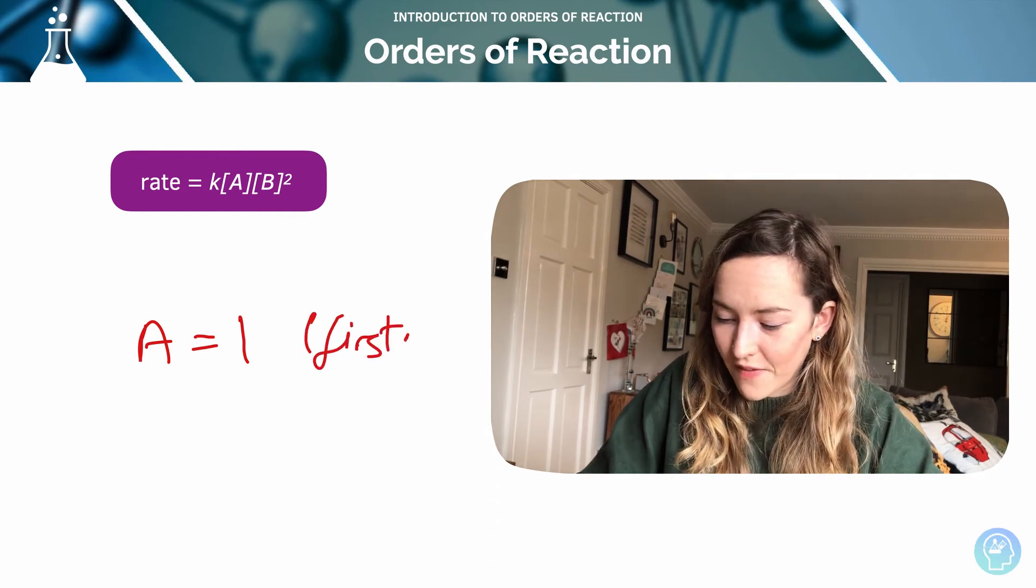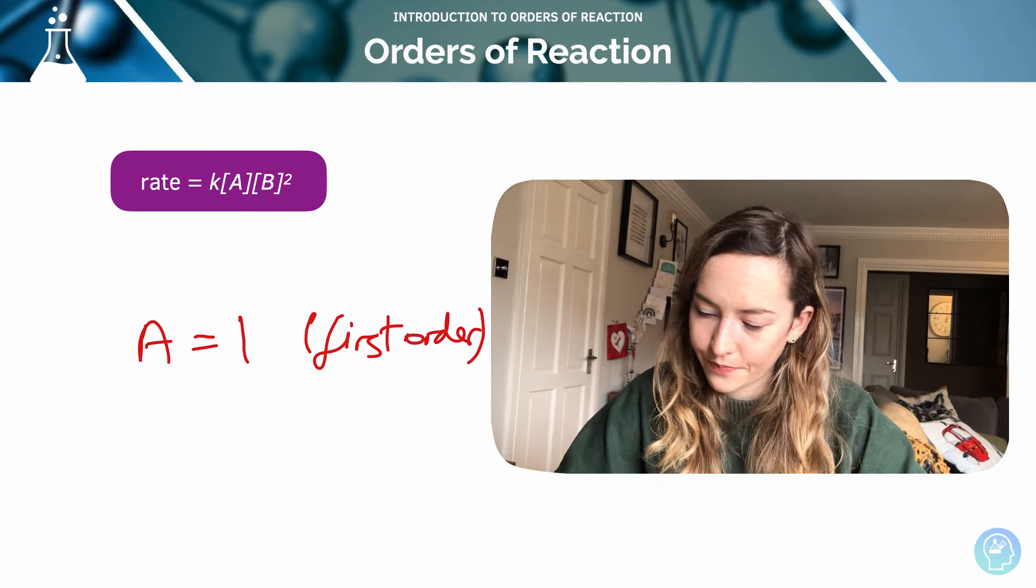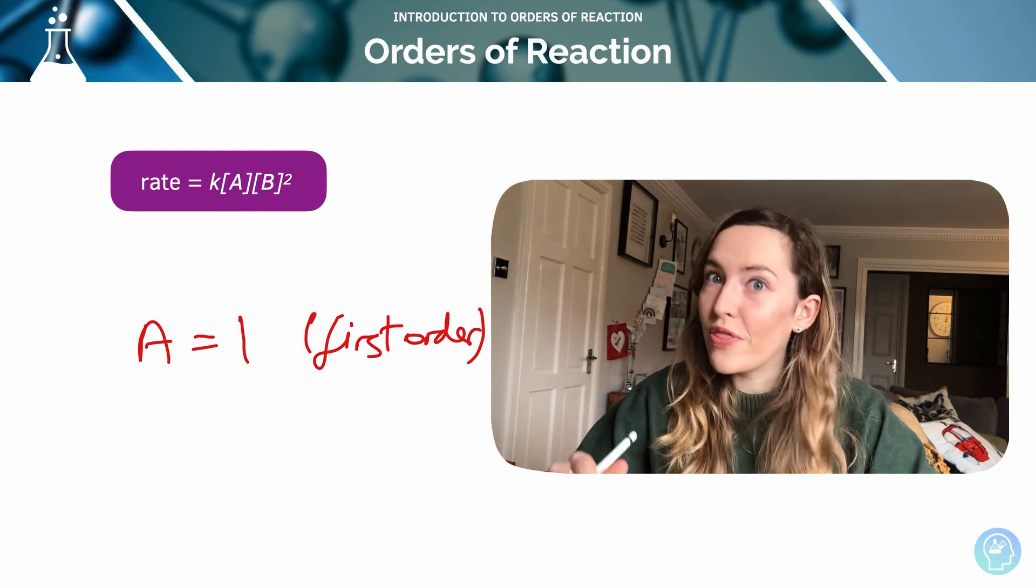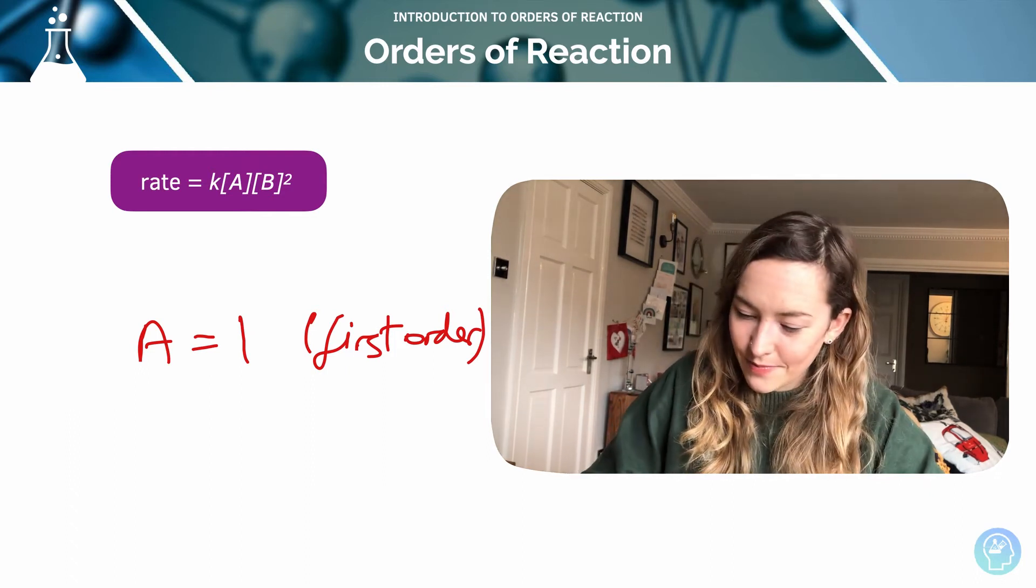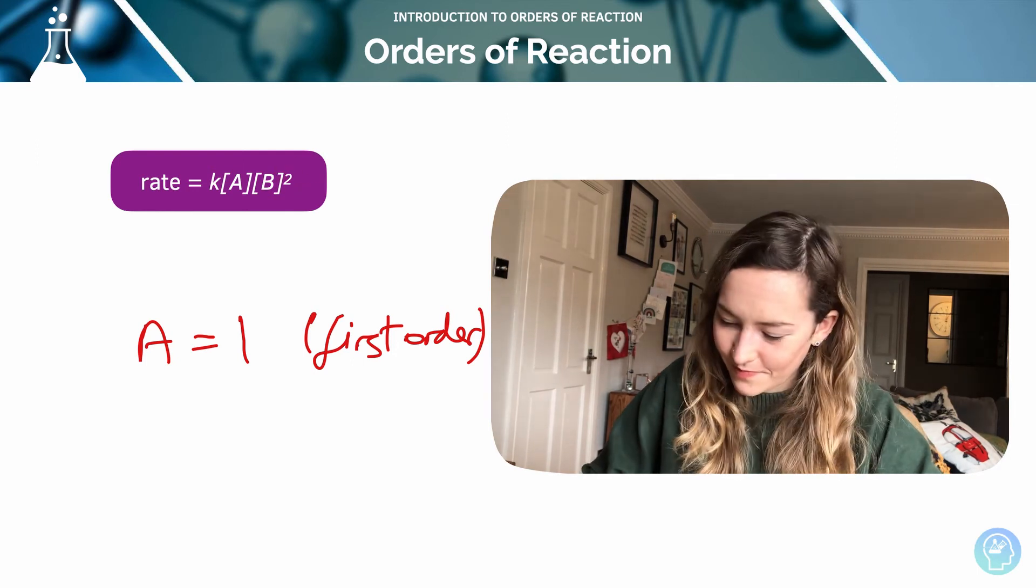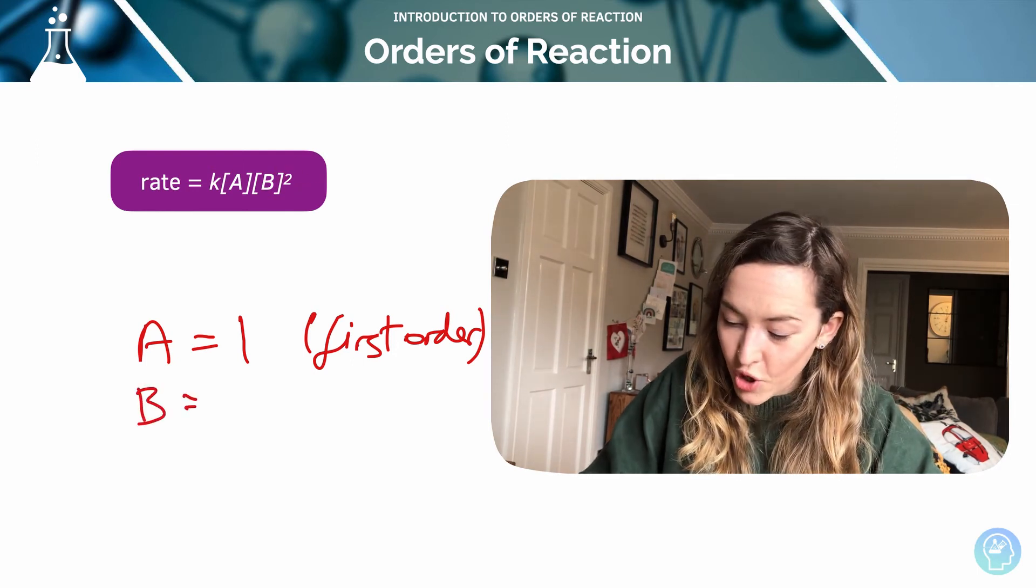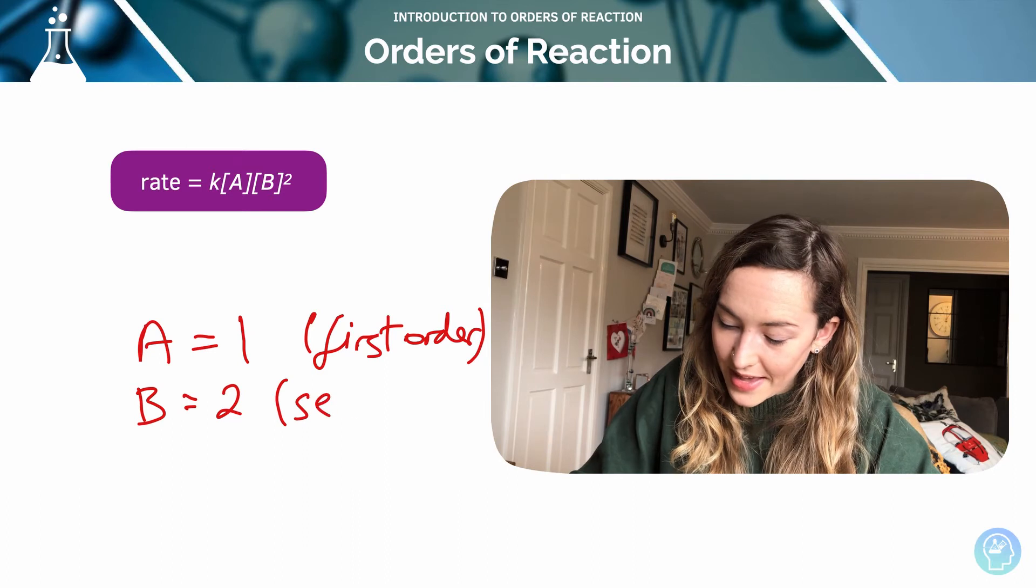That's how we talk about it, first order. The order of reaction with respect to reactant B is 2, because it's raised to the power of 2. So we say that is second order.